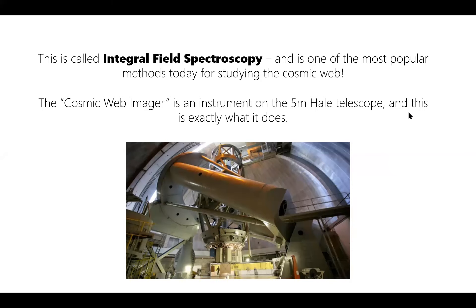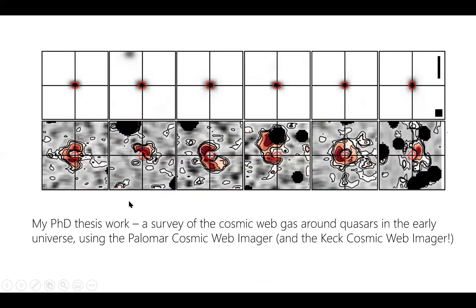The main instrument I used was the Cosmic Web Imager on the 5-meter Hale Telescope at Palomar. I spent many nights there. In my data, the bottom row shows maps of hydrogen emission around different sources, and the top row shows the sources before they've been removed — just point sources of distant galaxies about 10 to 12 billion light years away. My work was basically to take observations of these distant galaxies and study the hydrogen gas around them connected to the cosmic web, to understand how that gas fueled their formation and evolution.